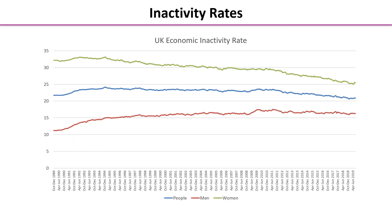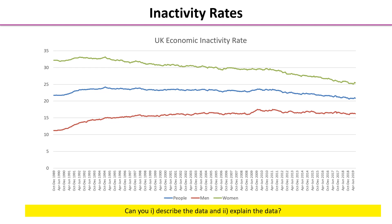On this next screen we've got inactivity rates. Inactivity refers to someone that isn't employed, isn't unemployed, and isn't actively looking for work - they sit outside of the labour force. Two little tasks for you here: pause the video, see what you come up with. Can you describe the data - that's a really key task for an economist - and what explanations can you come up with?